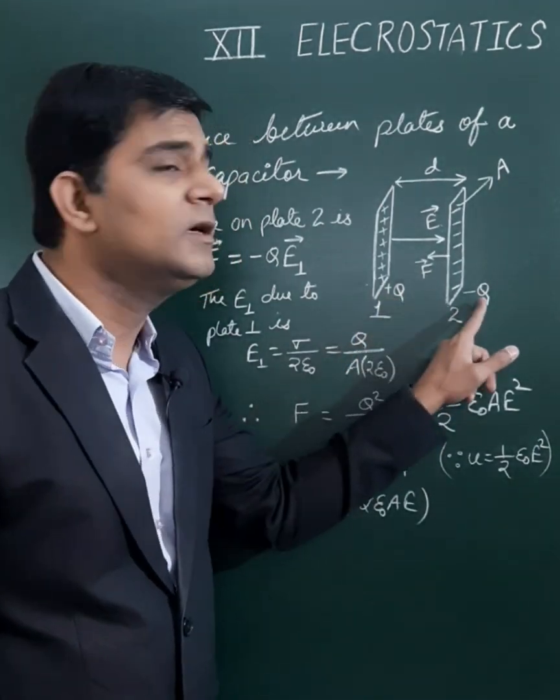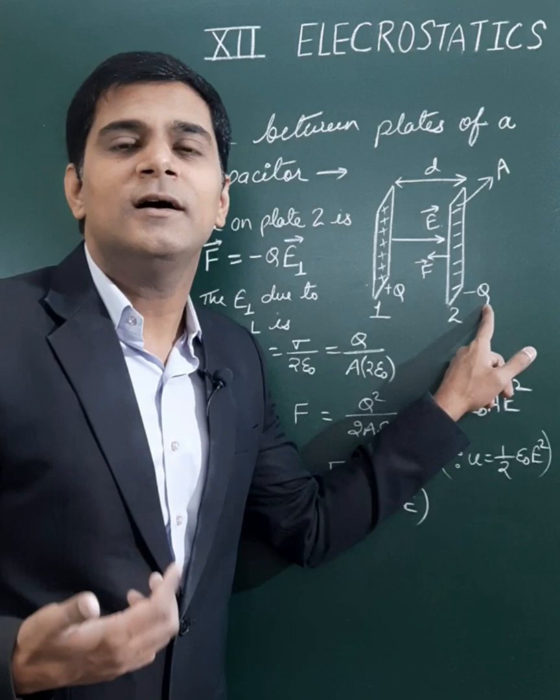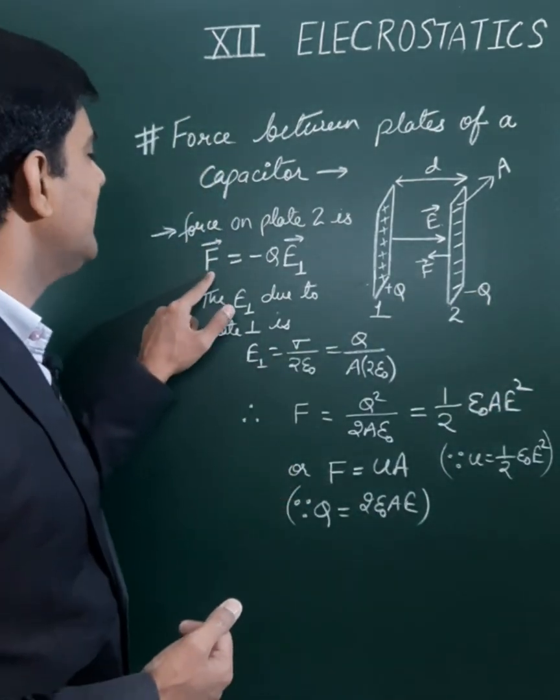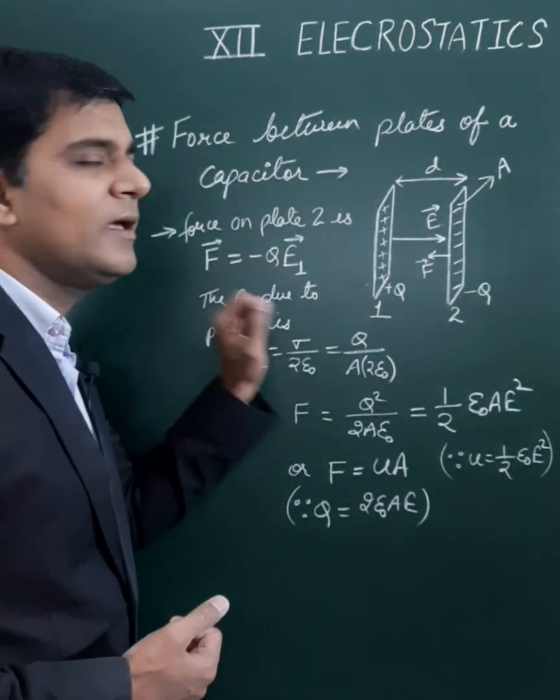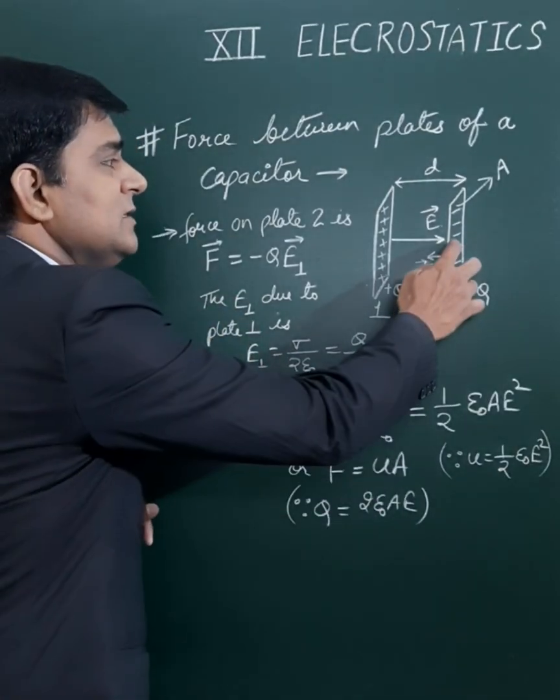The first plate has charge +Q, and the second plate has charge -Q. So the force will be given as F equals minus Q times E1. This is the force on the second plate.